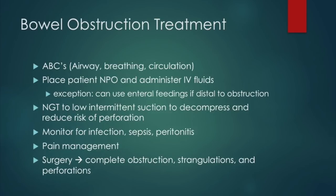Bowel obstruction treatment begins with ABCs, placing the patient NPO, and administering IV fluids. One exception: during a very proximal bowel obstruction, enteral feedings through a J-tube can still be used if the J-tube is distal to the obstruction. Place an NG tube to low intermittent suction to decompress and reduce the risk of perforation. Monitor for signs of infection, sepsis, and peritonitis, and manage pain. Surgery is indicated only for complete obstructions, strangulations, and bowel perforations.